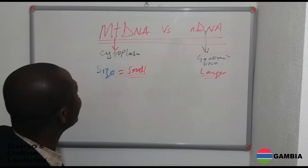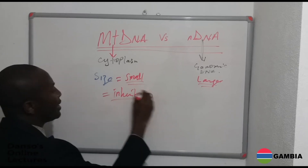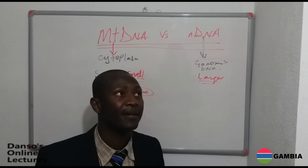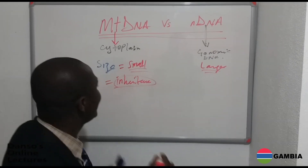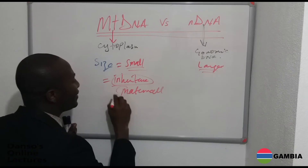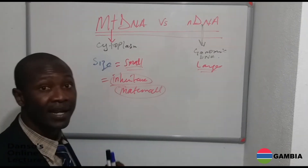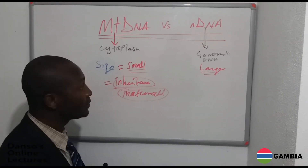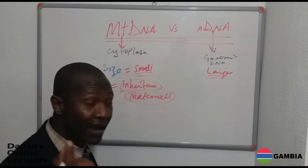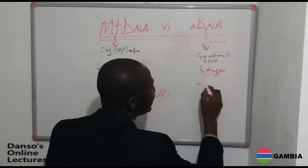The second difference is inheritance. Mitochondria DNA is inherited only maternally — that is, it is transferred from the mother to the child, and no part of the father's mitochondria DNA is transferred to the offspring. Only in one exception, such as some species of marine organisms like the bale worms, do we see recombination. For nuclear DNA, it is inherited from both parents.